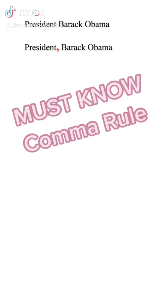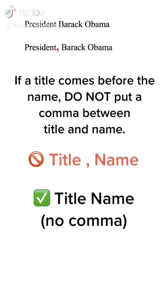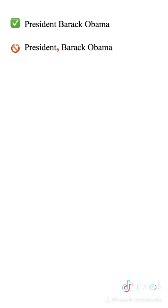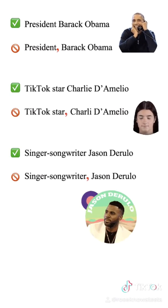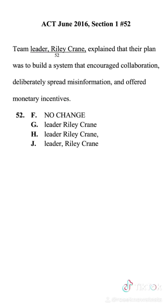A comma rule you should know: if a title comes before someone's name, such as President Barack Obama, you do not need commas between the title and the name. Applying that rule to this question, we can eliminate options F and J because both unnecessarily add commas between the title and the name.